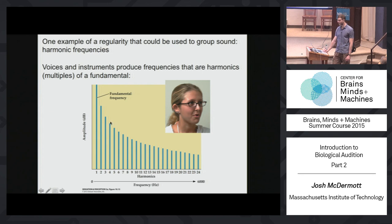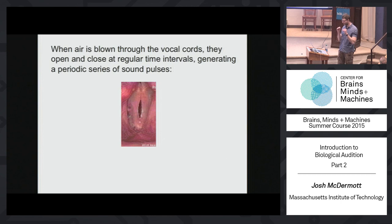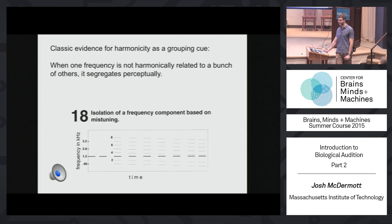There's classic evidence that your brain uses harmonicity as a grouping cue: if you take a series of harmonic frequencies and mistune one of them, your brain typically causes you to hear that as a distinct sound source once the mistuning becomes sufficient. As this thing is mistuned, at some point you actually start to hear two beeps — there's the main tone and then this other little beep. One other consequence of harmonicity is that your brain is able to use the harmonics of a sound in order to infer its pitch. The pitch you hear when you hear somebody talking is a collective function of all the different harmonics.